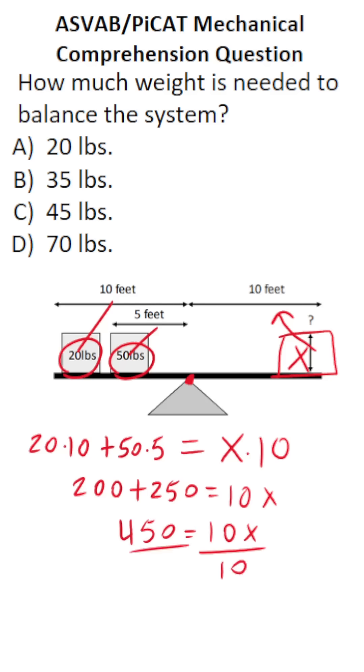Divide both sides by 10 now to get x by itself. This crosses out, leaving you with x on this side. Cross out these corresponding zeros. 45 divided by 1 is 45.